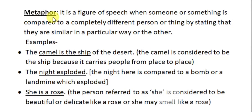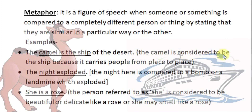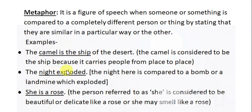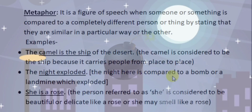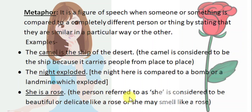Metaphor. It is a figure of speech when someone or something is compared to a completely different person or thing by stating that they are similar in a particular way or another. Examples: 'The camel is the ship of the desert' — the camel is considered to be the ship because it carries people from place to place. 'The night exploded' — the night is compared to a bomb or a landmine which exploded. 'She is a rose' — she is considered to be beautiful or delicate like a rose, or she may smell like a rose.